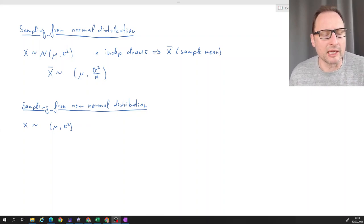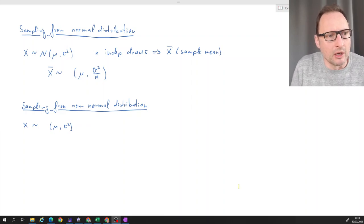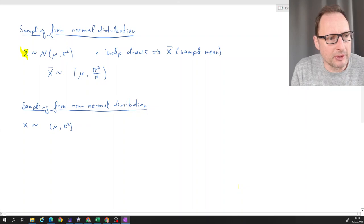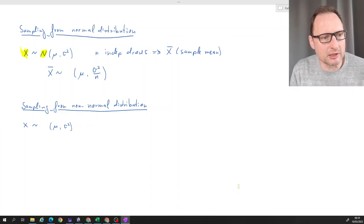So what is that great insight that we're being given by the central limit theorem? Let's start with this case where we have a random variable X and we know it's normally distributed with parameters expected value of μ and variance of σ².